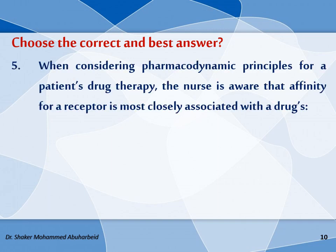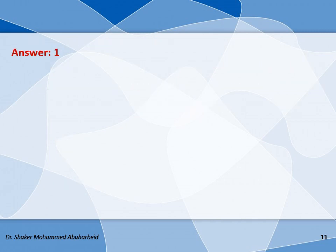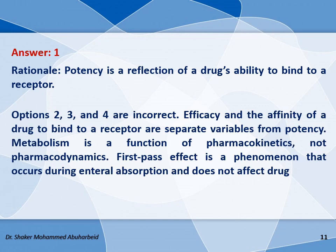Fifth question: When considering a pharmacodynamic principle for a patient's drug therapy, the nurse is aware that affinity for a receptor is most closely associated with a drug's potency, efficacy, metabolism, or first-pass effect. The correct answer is option one, potency. Potency is a reflection of a drug's ability to bind to a receptor. Efficacy and affinity are separate variables from potency. Metabolism is a function of pharmacokinetics, not pharmacodynamics. First-pass effect is a phenomenon that occurs during intestinal absorption and does not relate to receptor affinity.